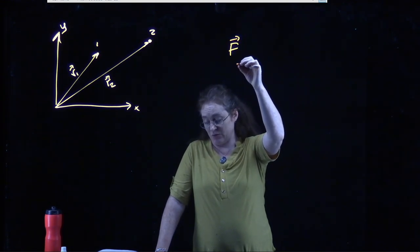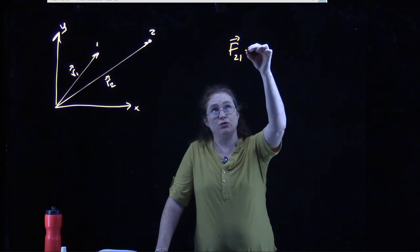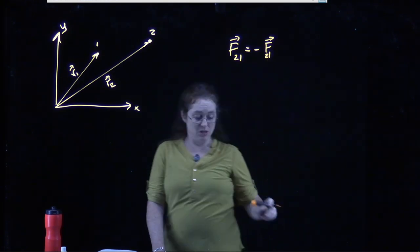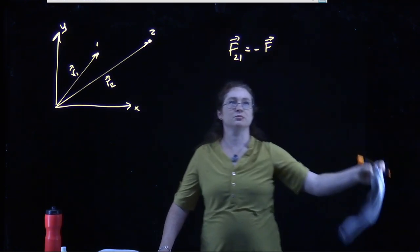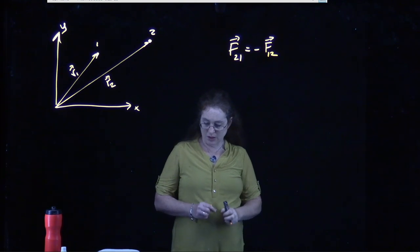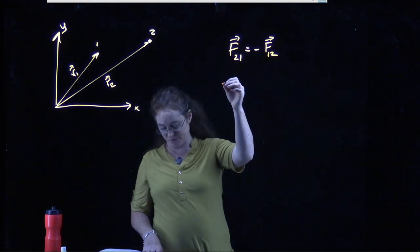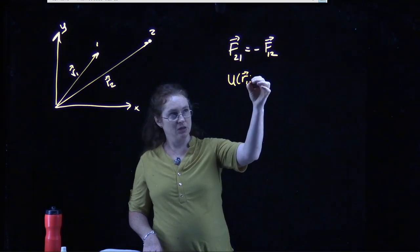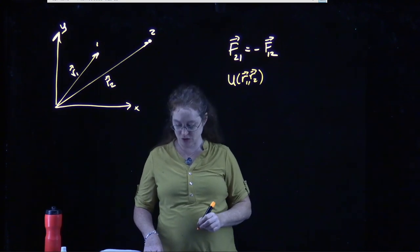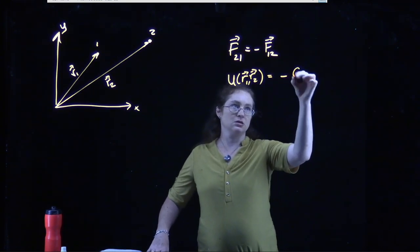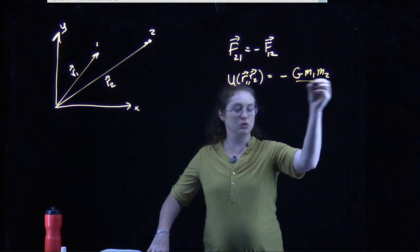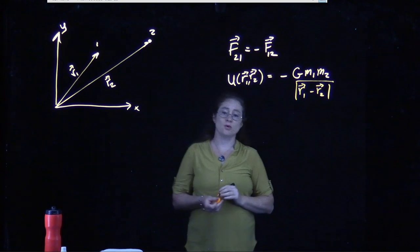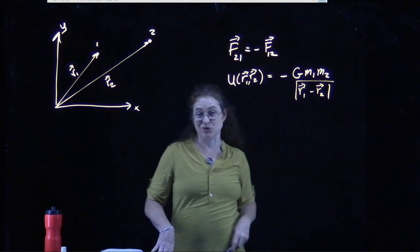The force on object 2 from object 1 is equal in magnitude and opposite in direction to the force on object 1 from object 2. We further assume the forces are conservative and central. For gravity, the potential, which is a function of the position of the two objects, is G·m1·m2 over the magnitude of r1 minus r2. This same form applies to the electrostatic force.